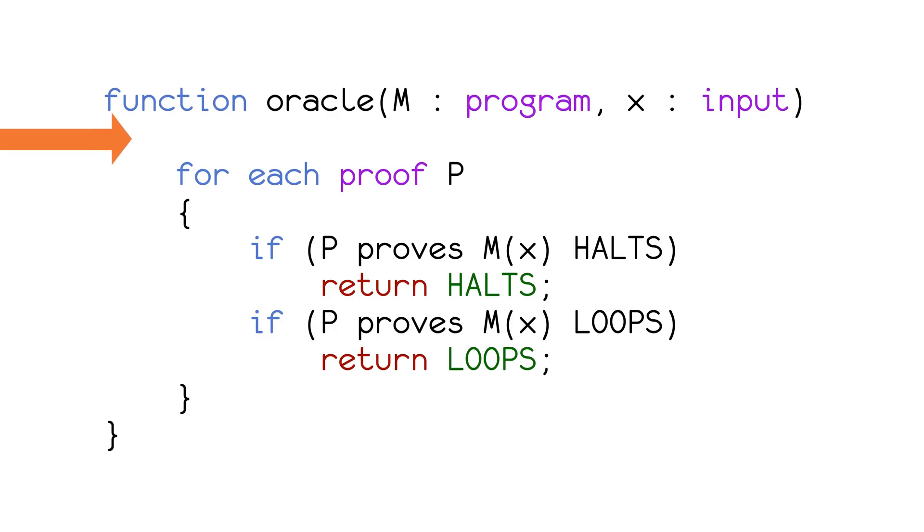This program goes through all possible math proofs and checks if we have a proof that a given program halts on a given input. If we find it, we say that the program run on the input halts. If we find a proof that it loops, then we say it loops.